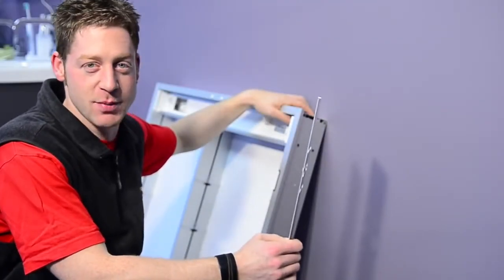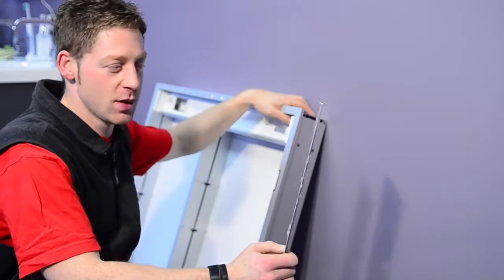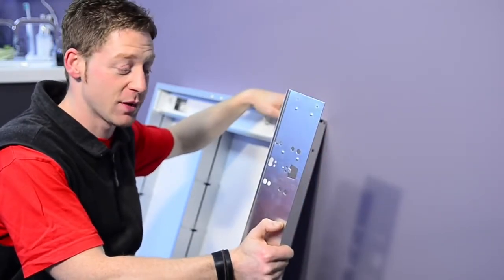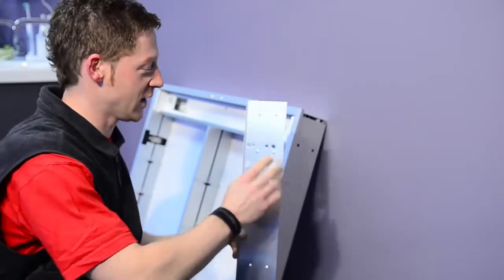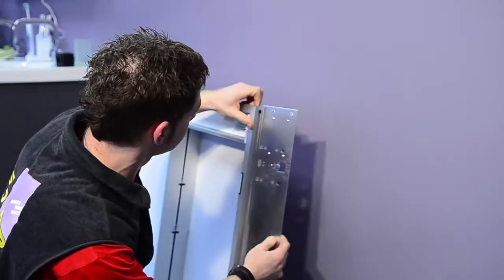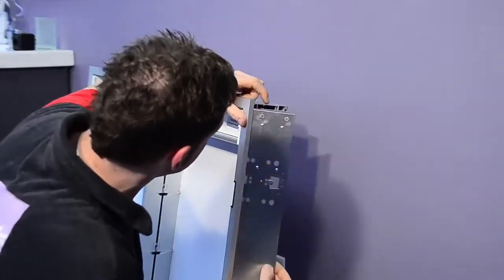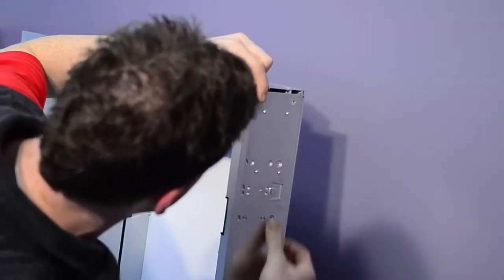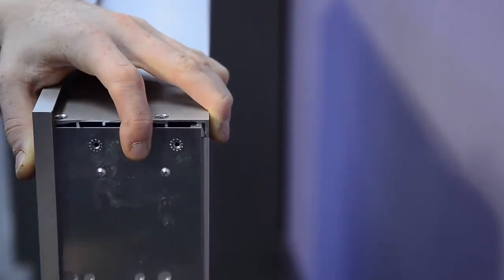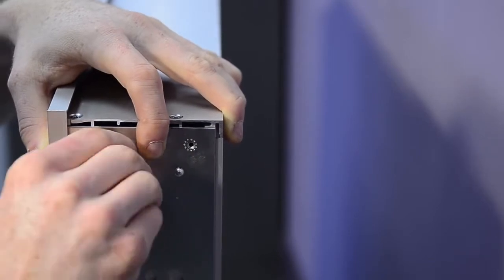Now we're going to mount the side mirrors before we hang the cabinet. Therefore we need the sheet metal here where the side mirrors slide on. The clips are facing the wall when we mount it. The side profile has holes in it where we fasten the sheet metal.